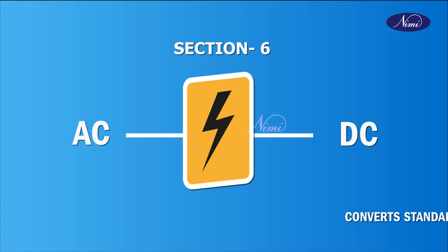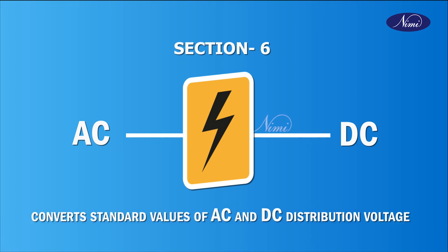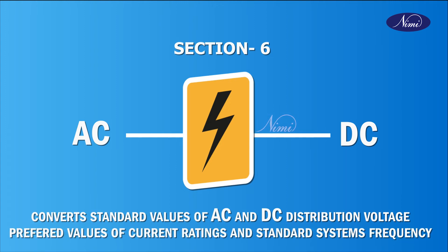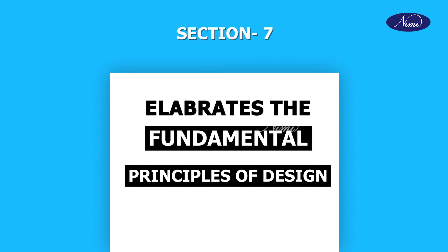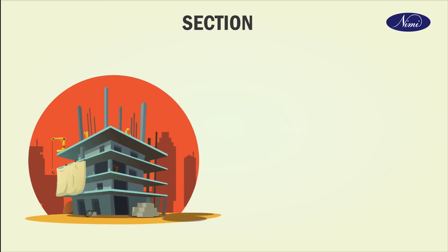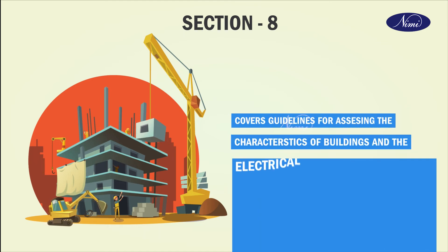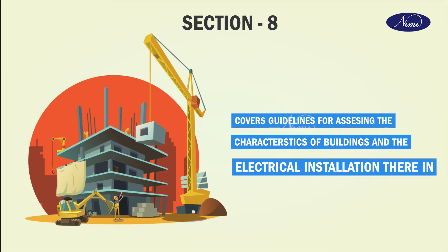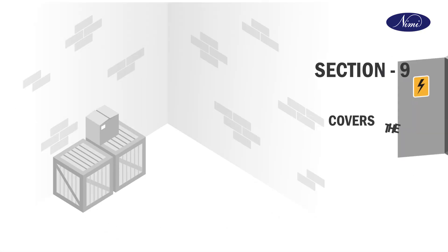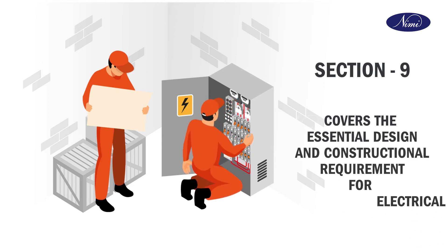Section 6 covers standard values of AC and DC distribution voltage, preferred values of current ratings and standard system frequency. Section 7 elaborates the fundamental principles of design and execution of electrical installations. Section 8 covers guidelines for assessing the characteristics of buildings and the electrical installations therein. Section 9 covers the essential design and constructional requirements for electrical wiring installations.